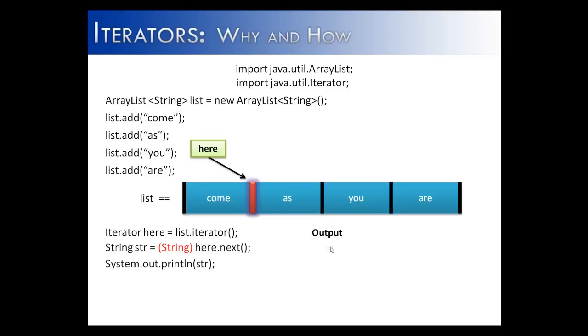The reason why that is an error is because iterators store objects, store and return objects. So in order to pull this out and say it really is a string, I would have to class cast it as a string, and then it would be able to store it. And then it would print come.